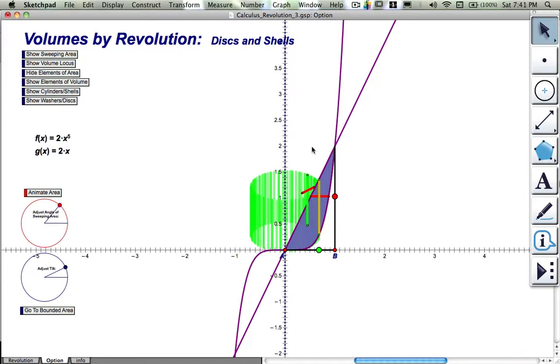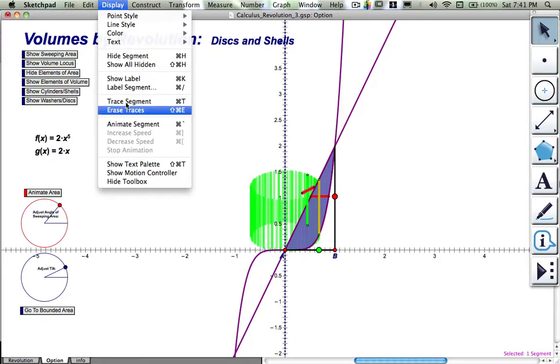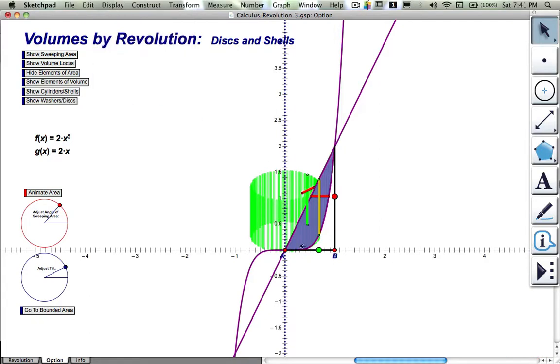And likewise, if I decide to use y, and I chop up the area and look at how much area belongs to each y value, then I'm looking at this little horizontal rectangle. And I can watch this trace out the space that it occupies as well. And that makes a different shape.